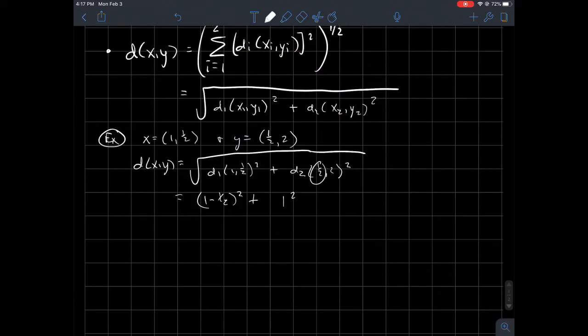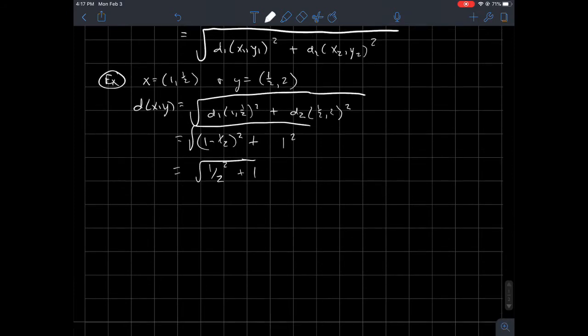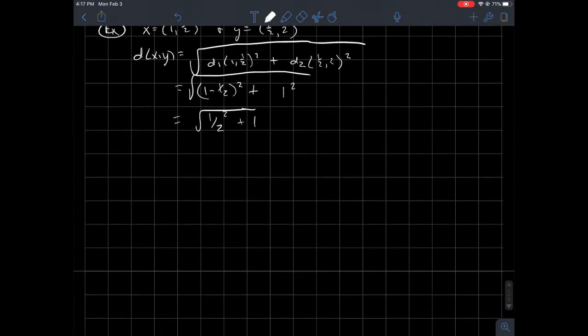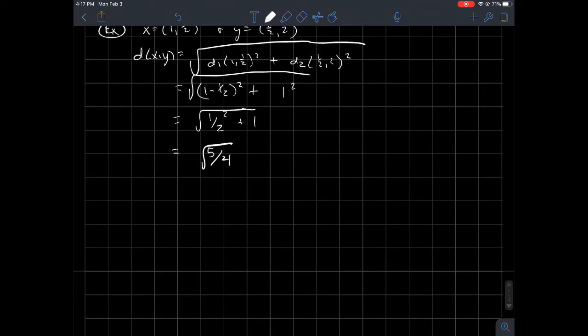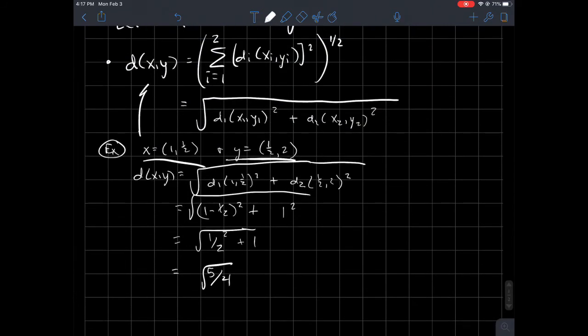And so what we ought to get there is one-half quantity squared plus one. And so I got to add some fractions. So I think that's one-fourth plus one. I'm thinking that's square root of five-fourths, or in other words, root five over two. Either way. So that's how I would measure the distance between these two points with this particular metric.